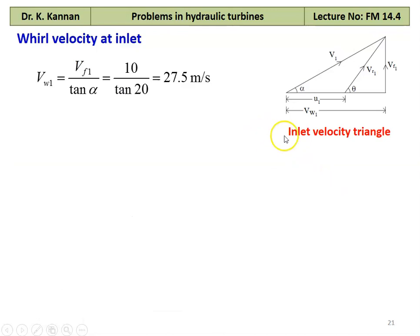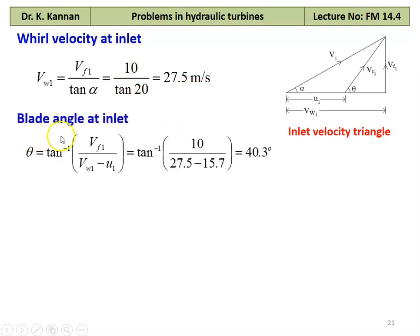Referring to the inlet velocity triangle, the whirl velocity at the inlet Vw1 equal to Vf1 divided by tan alpha, which is 10 divided by tan 20 equal to 27.5 meters per second. And the blade angle at the inlet, we calculate theta referring to the inlet velocity triangle: theta equal to tan inverse of Vf1 divided by (Vw1 minus U1), which is tan inverse of 10 divided by (27.5 minus 15.7) equal to 40.3 degrees.